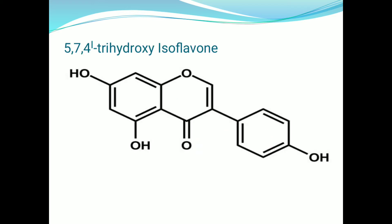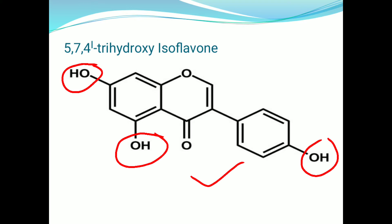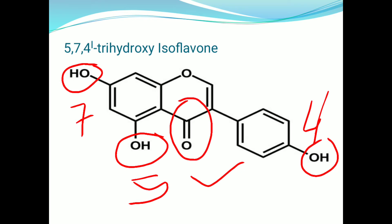This is the structure of genistein. In this structure, three hydroxy groups are present at the 4', 5, and 7 positions. This structure also contains a C double bond O group. So genistein is also called 4',5,7-trihydroxyisoflavone.